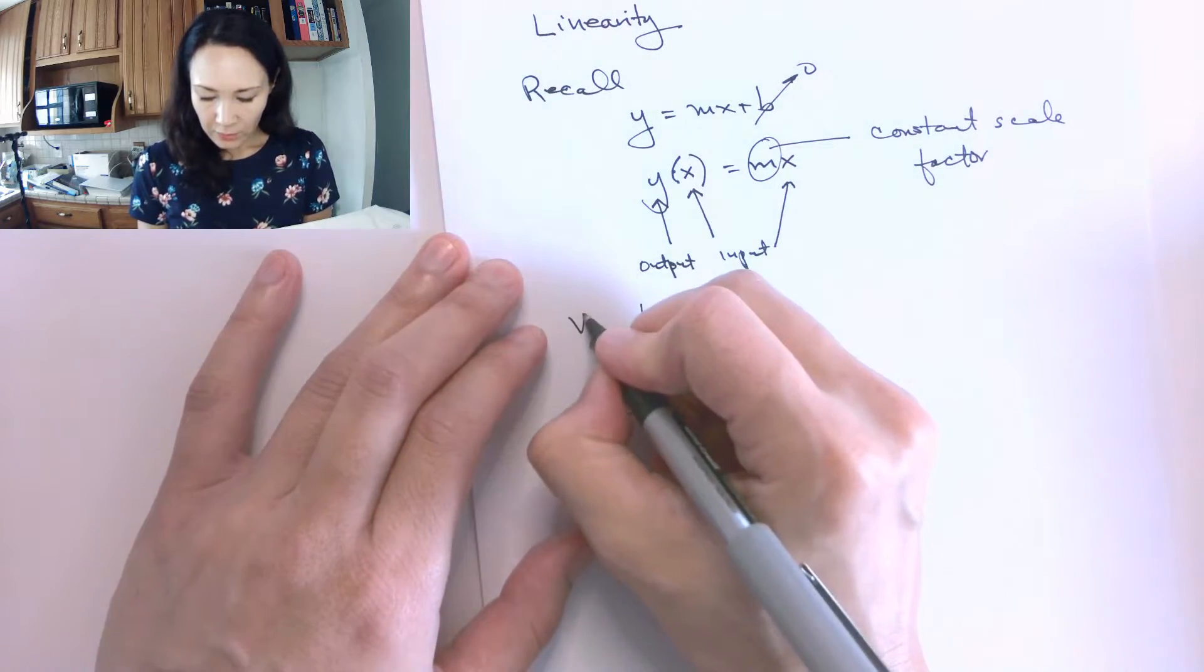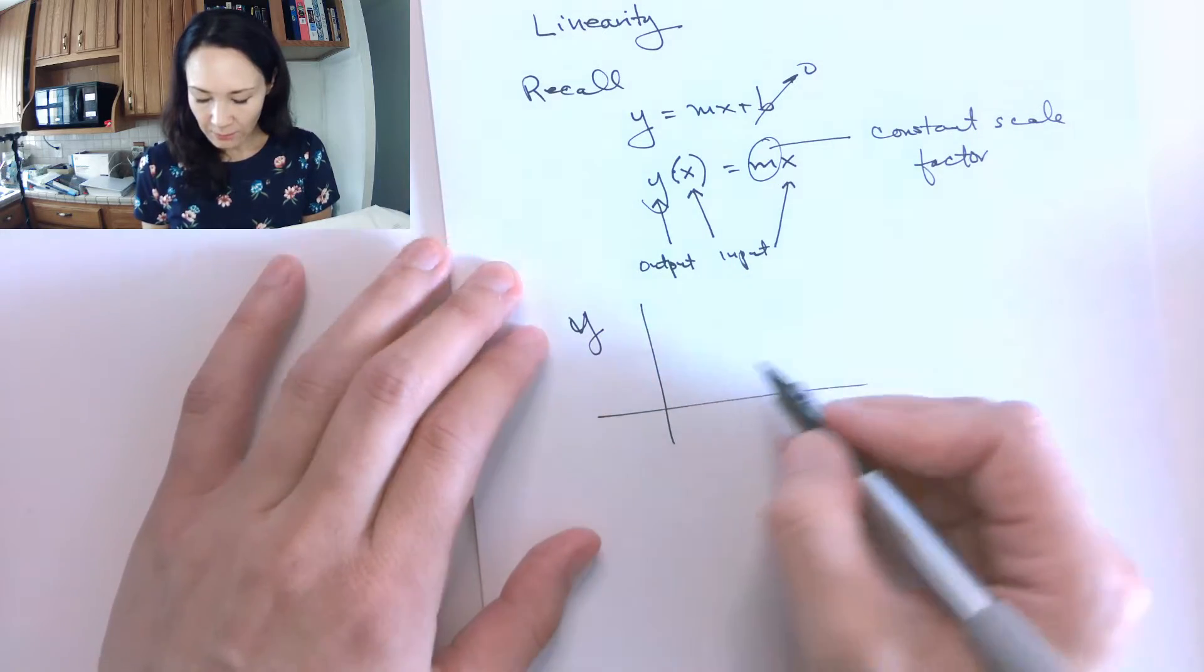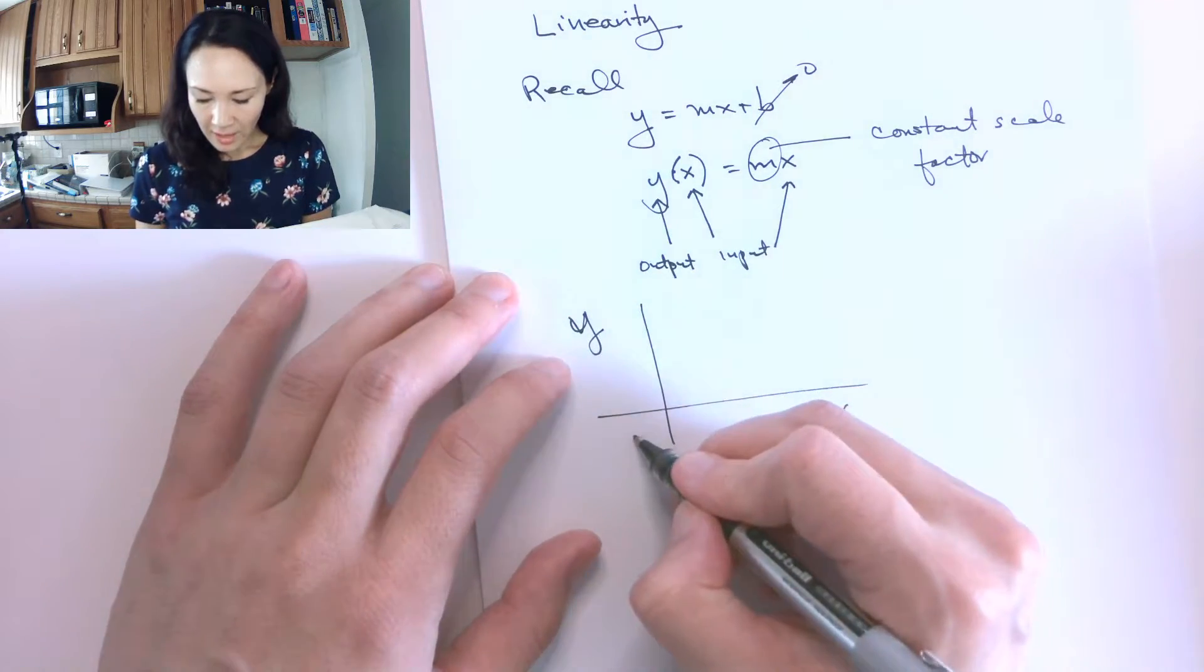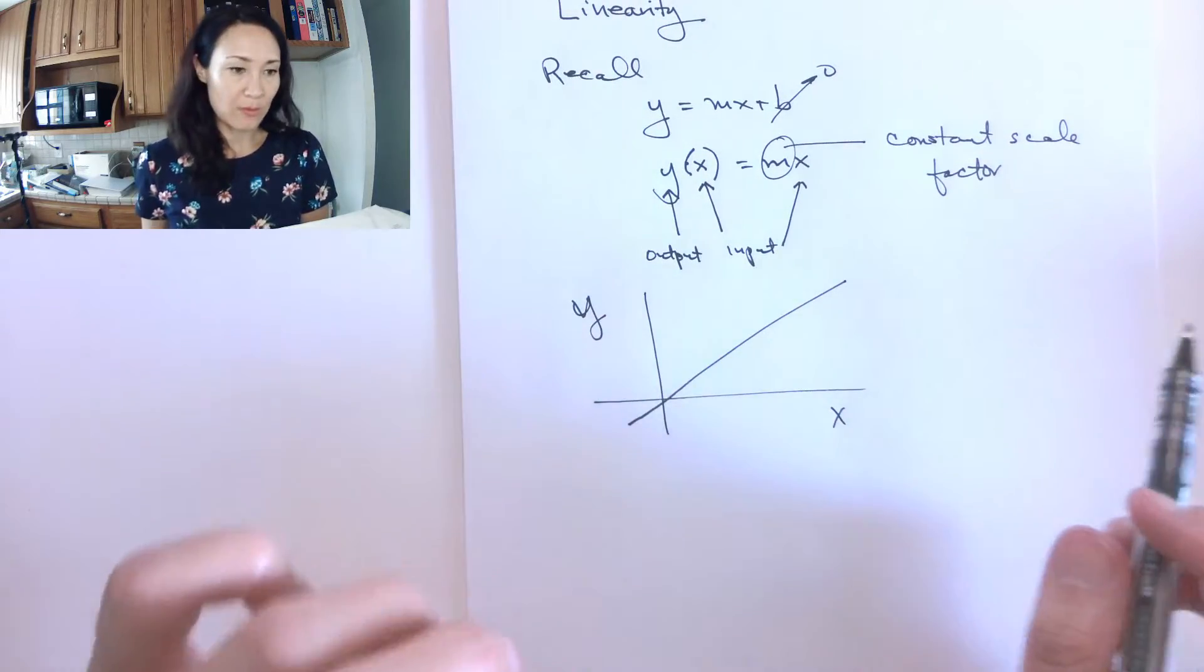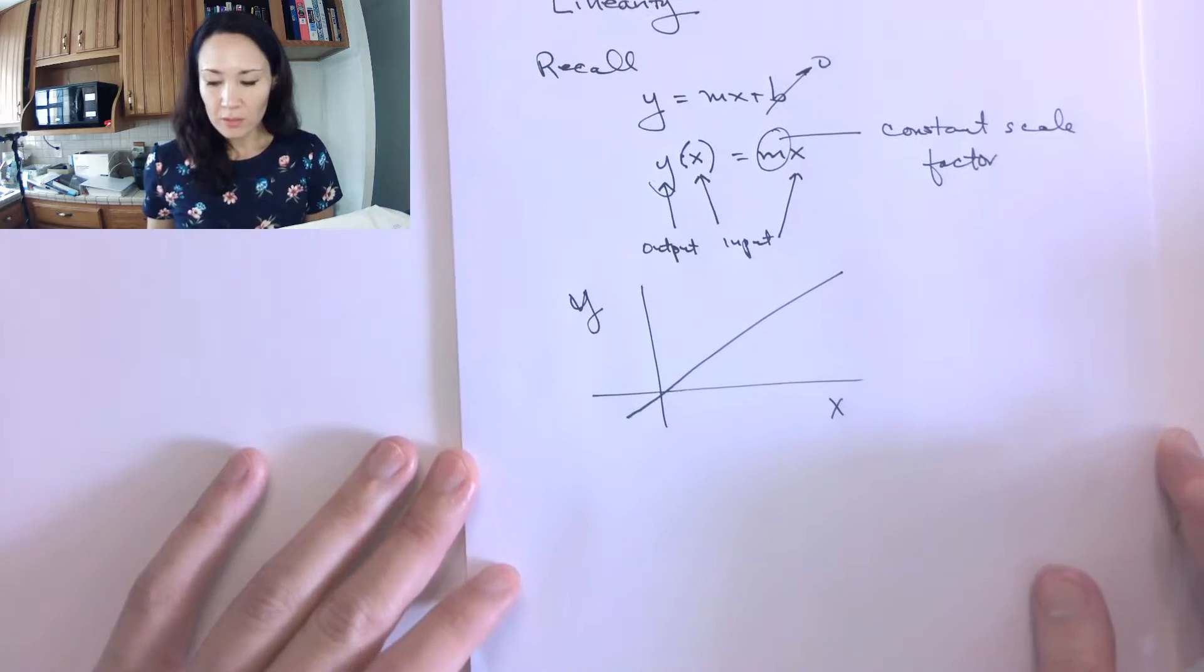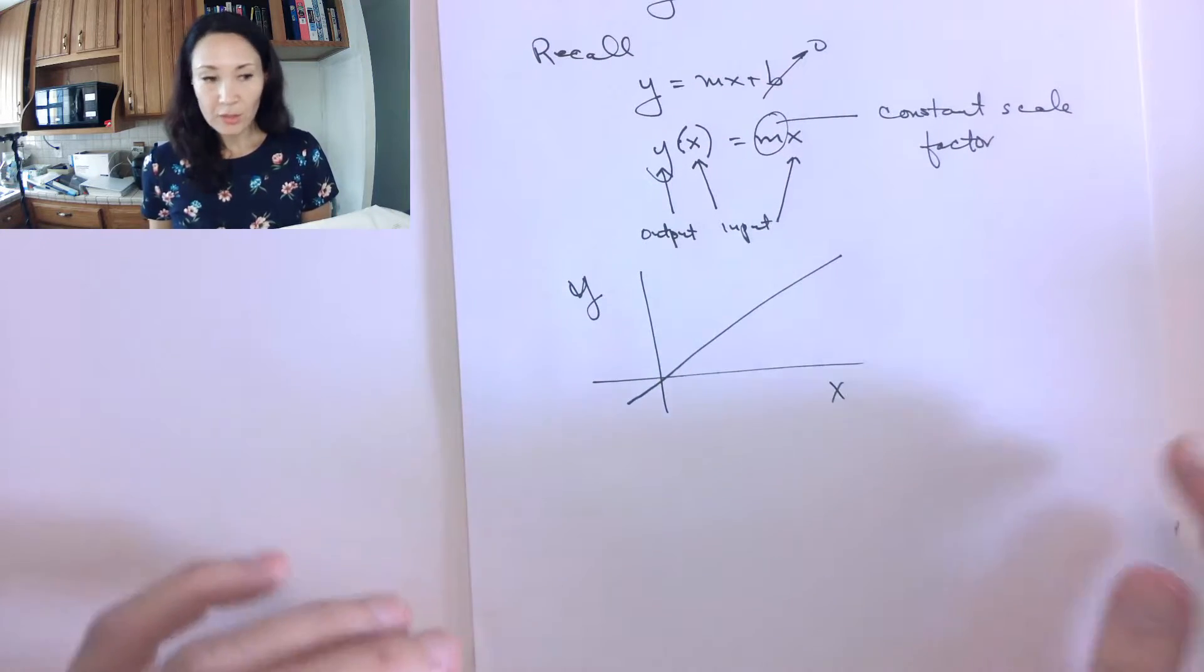If we were to plot y as a function of x, depending on what our m value is, it's going to tell us how steep our line will be. So how do we relate this and how do we use this for circuit analysis?